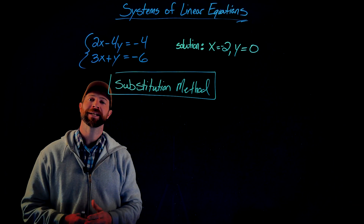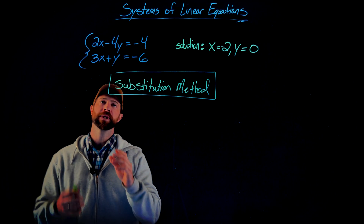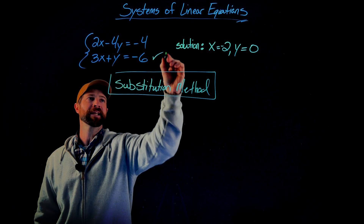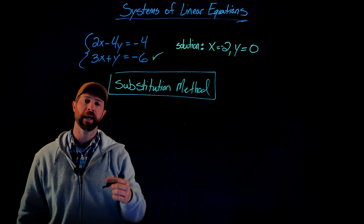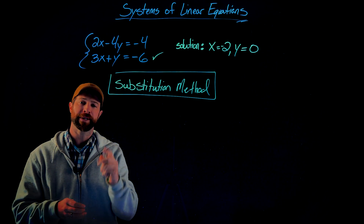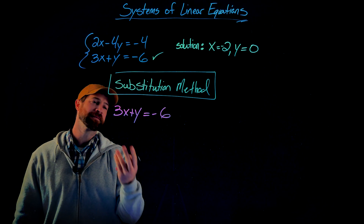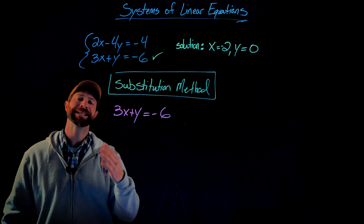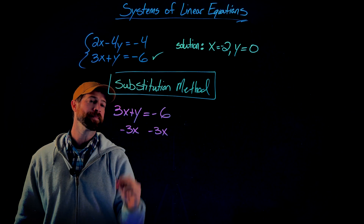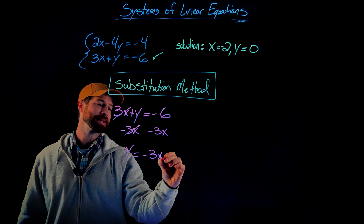One of the popular methods for solving a system of linear equations is using the substitution method. What we're going to do is solve one of these equations for one of the variables. I'm going to take the second equation and solve it for y, because the coefficient in front of y is 1, which makes it easy to solve for. All I need to do is subtract 3x from both sides, canceling out the x term, to get y equals negative 3x minus 6.